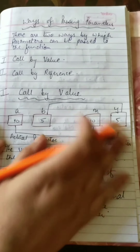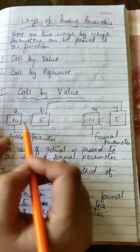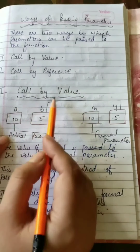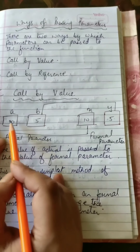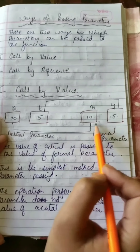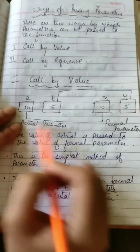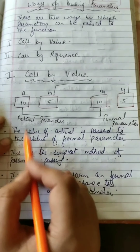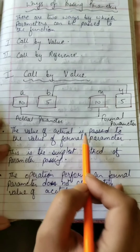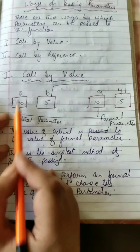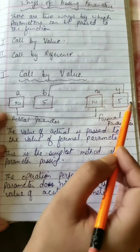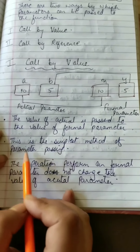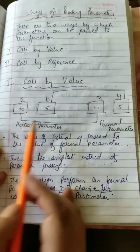In call by value, if a and b are actual parameters with values a = 10 and b = 5, the value of actual parameters is passed to the formal parameters. So the value of a is passed to x and the value of b is passed to y. This is the simplest method of passing parameters because we are simply passing the value from actual parameter to formal parameter.